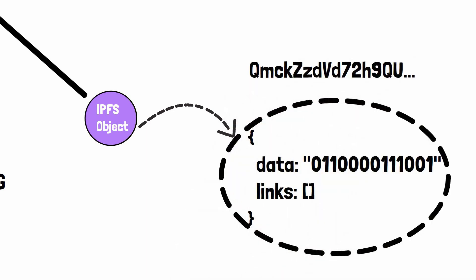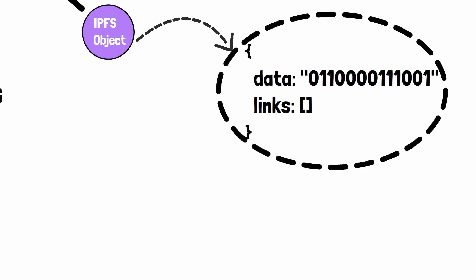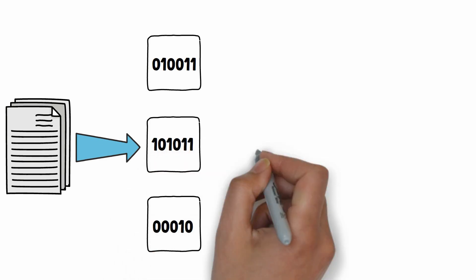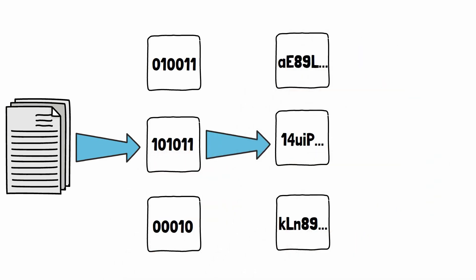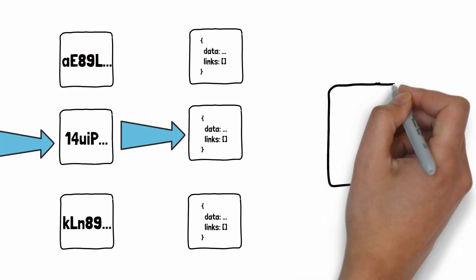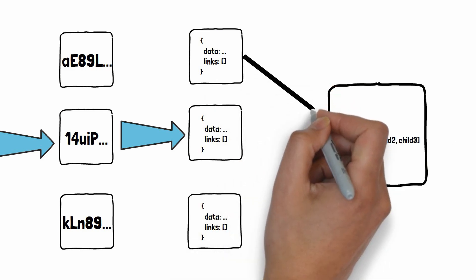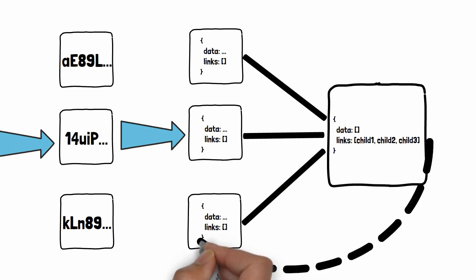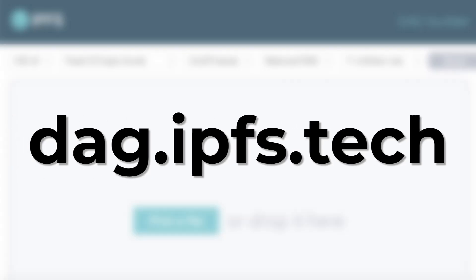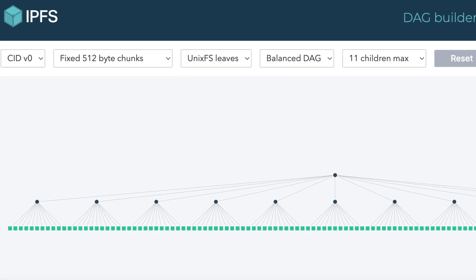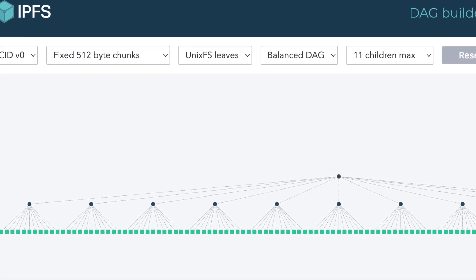The whole object is identified by a CID based on the hash of the data. Here is how a file is processed: first, IPFS chunks the data into blocks of 256 KB maximum. Then IPFS computes the hash for each block. Then each block is turned into an IPFS object. And finally, a top IPFS object is added with no data but with links to all the other objects. This is what we call a Merkle DAG. If you want to experiment, there is a tool where you can upload a file and it simulates how IPFS breaks it down into a Merkle DAG.